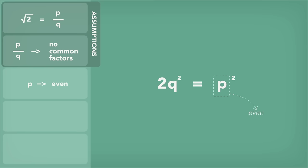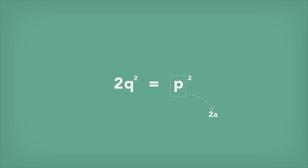Thus, p could be expressed as 2 times a, where a is an integer. Substituting this into the equation and simplifying gave q squared equals 2 times a squared.